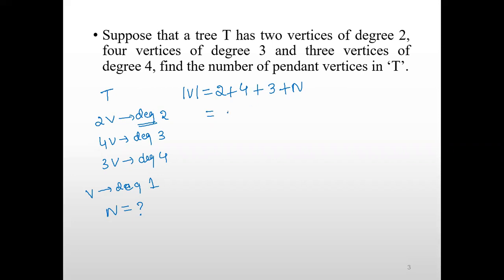We know the total number of edges in a tree equals the total number of vertices minus 1. So the edge count equals (n + 9) minus 1, which is n plus 8.